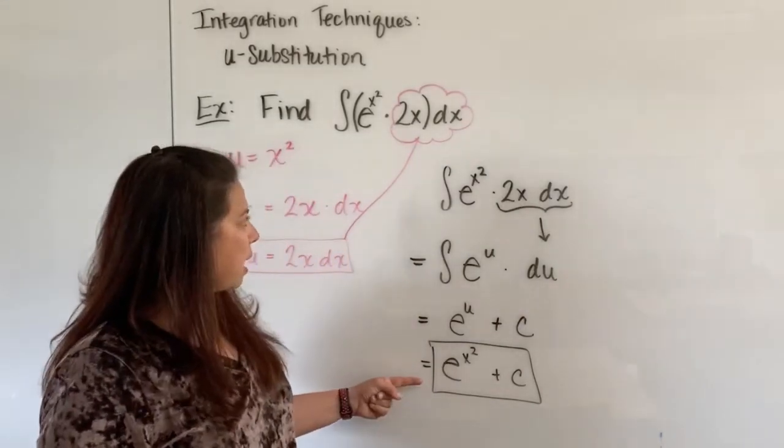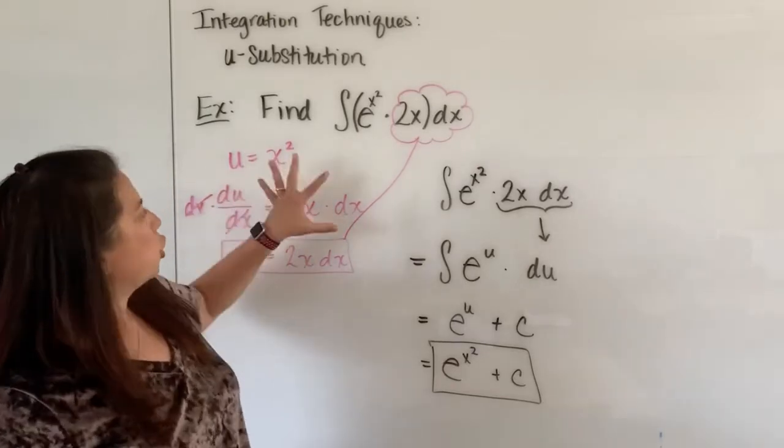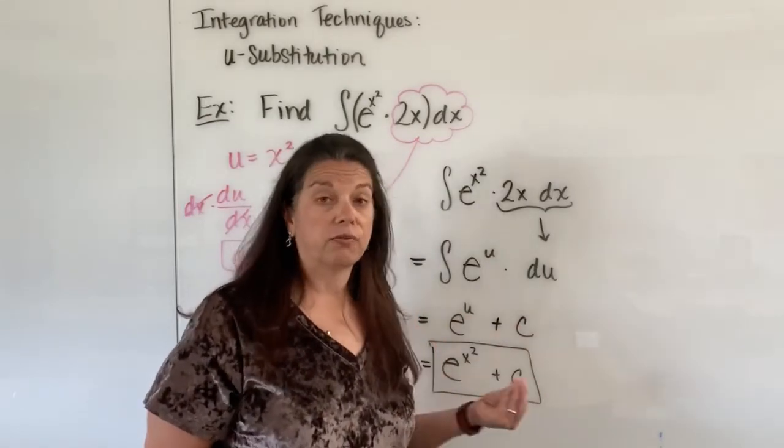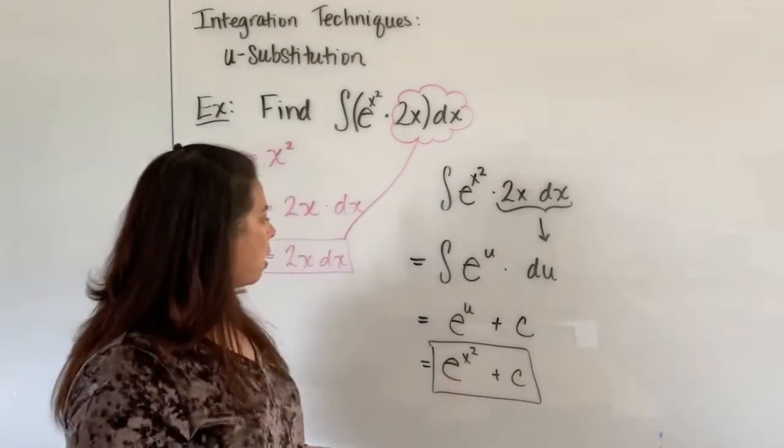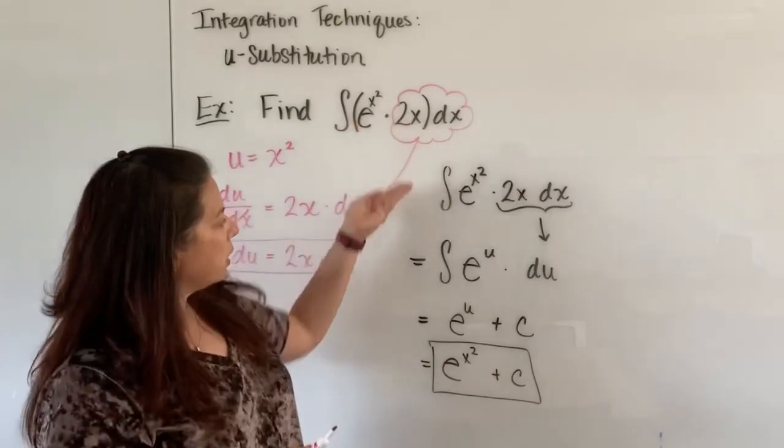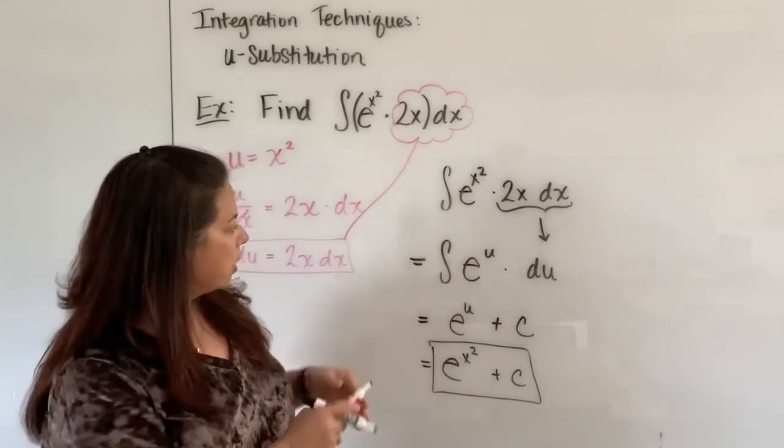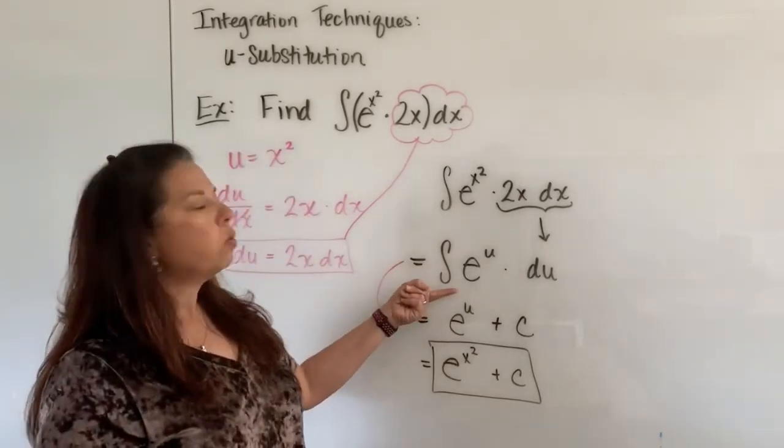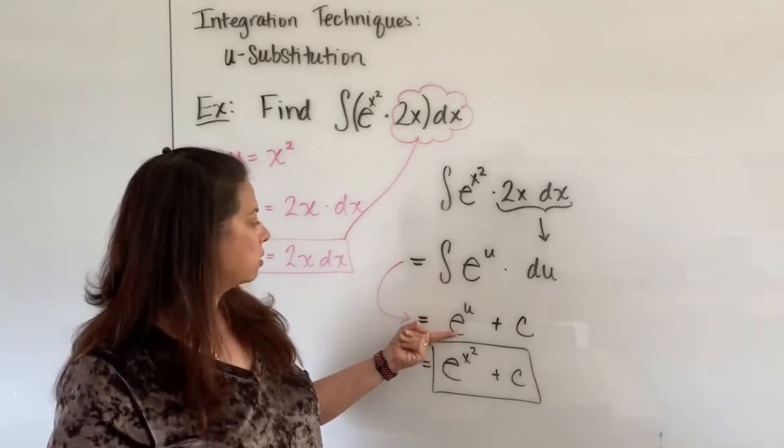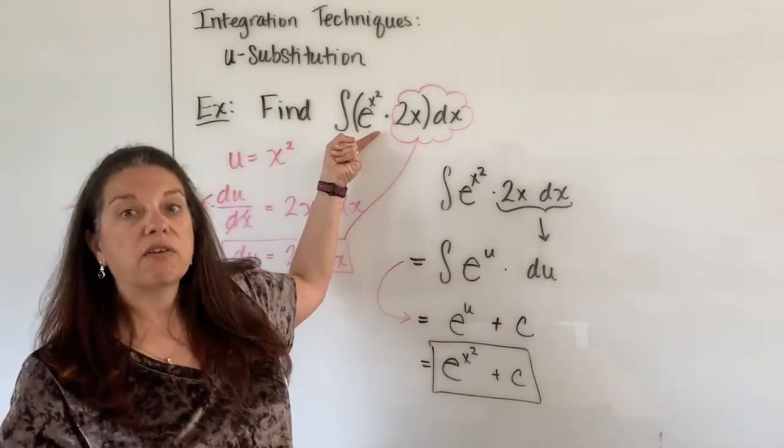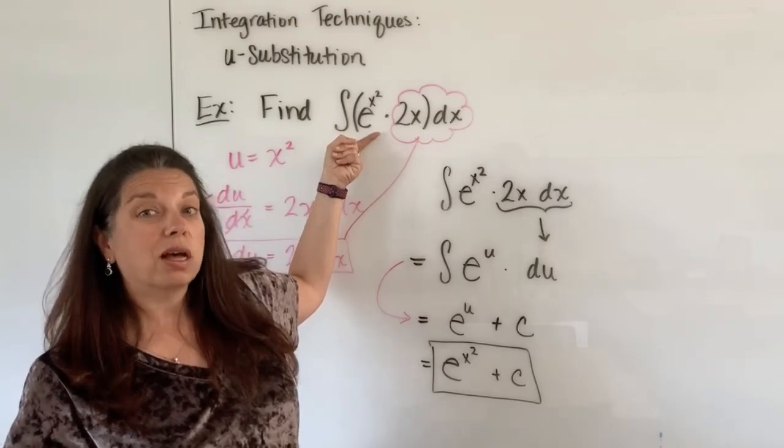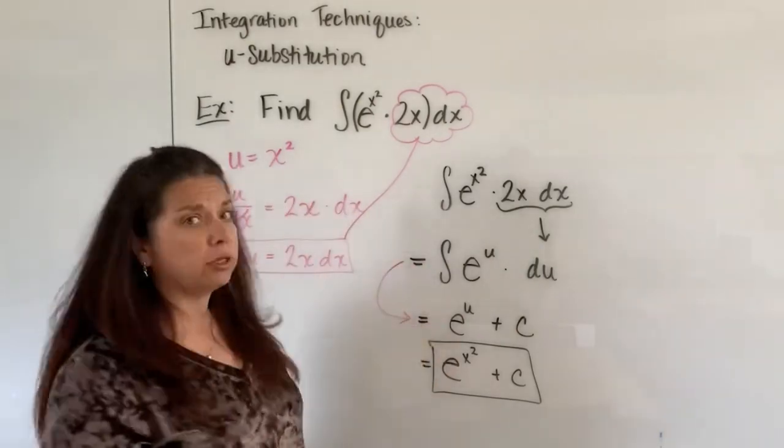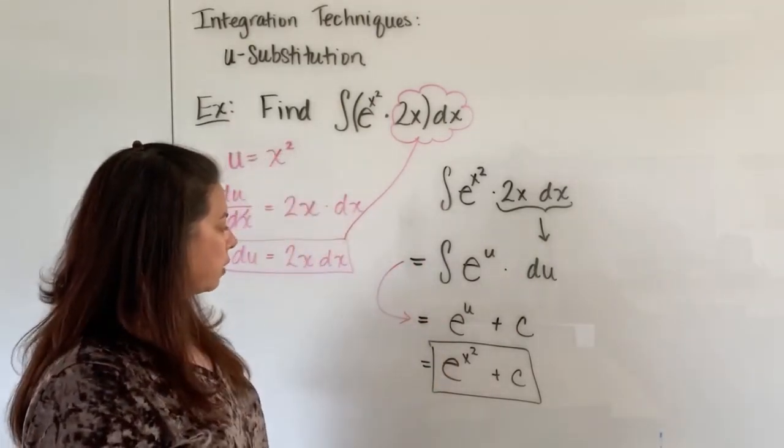A couple things to point out here. The whole reason why we chose to do a u-substitution is to make the actual integration much easier for us to handle. So by exchanging out all the x's for various versions of a u, this point right here where we could take the integral of e to the u was a much easier lift for us to be able to handle than it would have been had we started trying to figure out from the beginning what the integral of e to the x squared times dx would have been. So that's the whole purpose behind a u-substitution, to make that part a little easier for us.